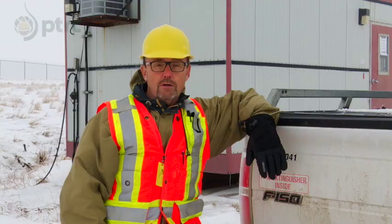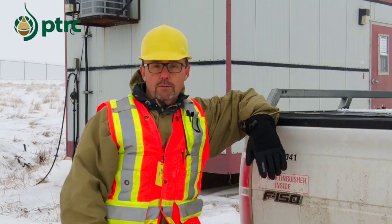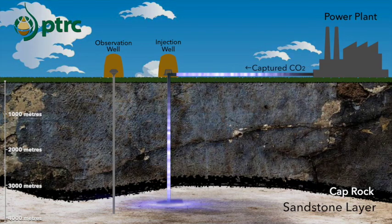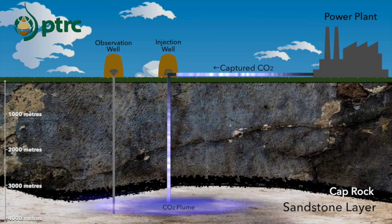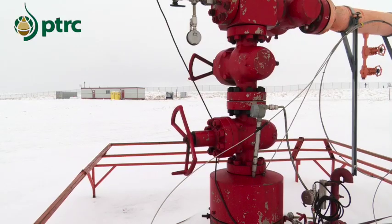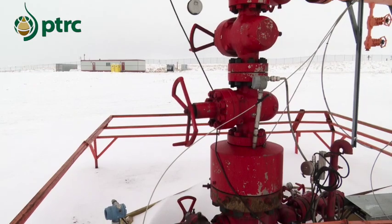You need a reservoir that will take the CO2, but you also need a cap rock or a seal above it that would keep the CO2 from rising up out of the reservoir and coming back up to the surface. The CO2 travels through a pipeline and gets sent into a well that's about 3.4 kilometers deep. It gets sent into a sandstone formation — a saline formation with salty water in it — and the CO2 gets injected there and stored in there forever.